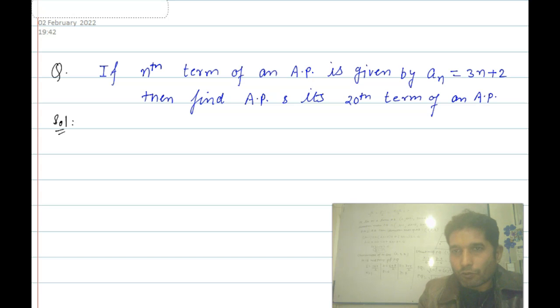So first we write a_n equals 3n plus 2. This a_n is the nth term of the AP. So first we find the resulting sequence or AP. What do we do here? If we find the AP, we find the starting three terms.